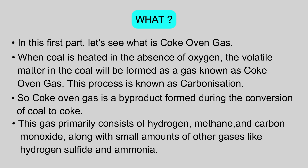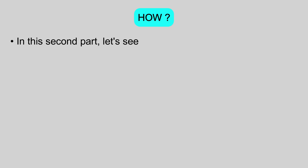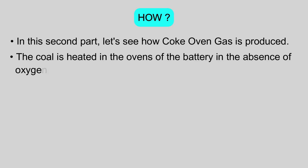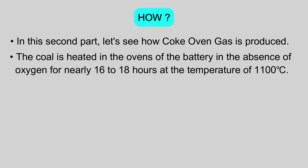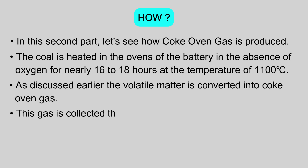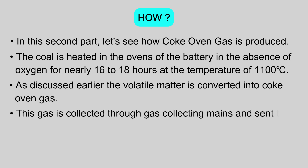In this second part, let's see how coke oven gas is produced. The coal is heated in the ovens of the battery in the absence of oxygen for nearly 16 to 18 hours at a temperature of 1100 degrees centigrade. As discussed earlier, the volatile matter is converted into coke oven gas. This gas is collected through gas collecting mains and sent to the main common pipeline.